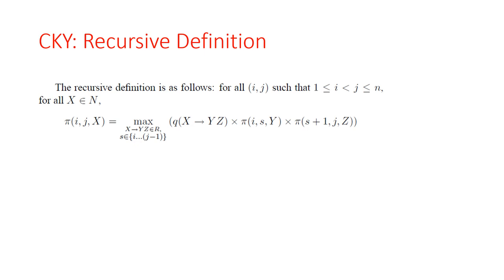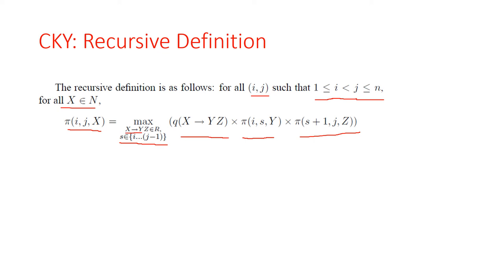The recursive step: for all i < j (with 1 ≤ i and j ≤ n) and all non-terminals X, π(i, j, X) is computed as the maximum over all rules X → YZ in R and all split points s ∈ {i, ..., j−1} of: q(X → YZ) × π(i, s, Y) × π(s+1, j, Z).